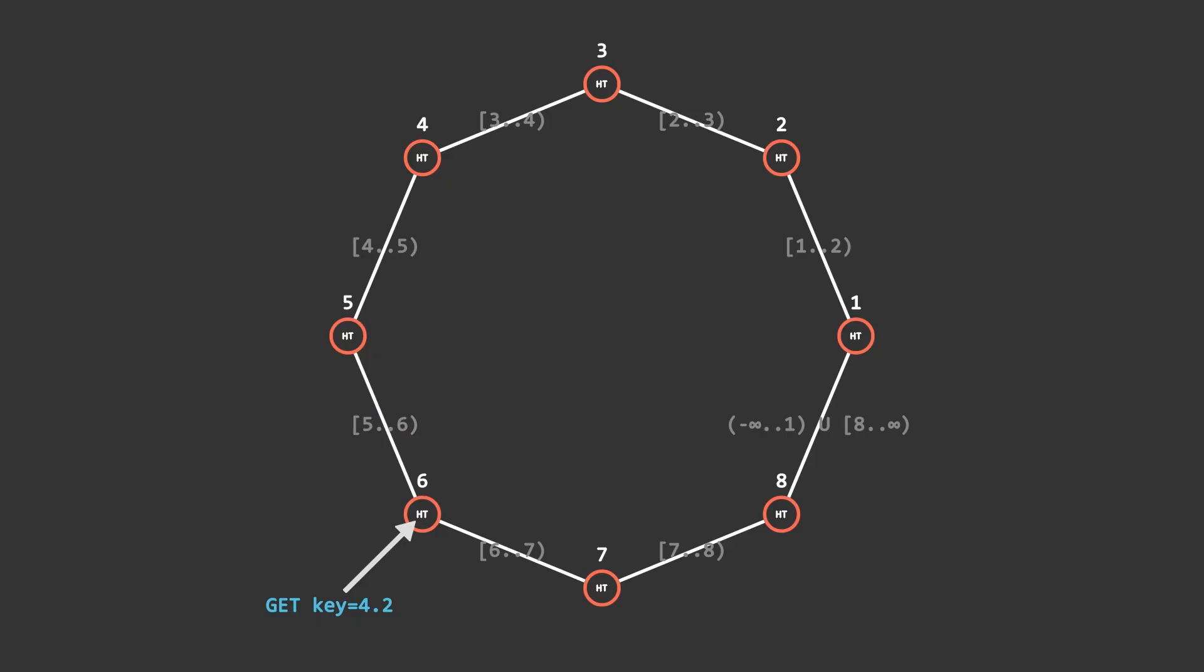Server 5 sees the key is in its range, so it attempts to access its inner hash table. If the key exists, then we return it to the sender of the request. Otherwise, we indicate it doesn't exist. And that's how a simple request works.